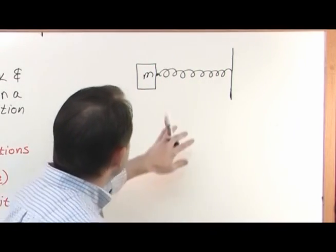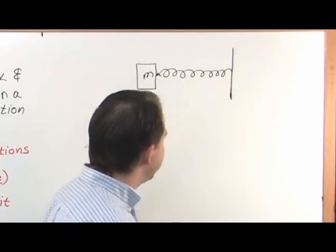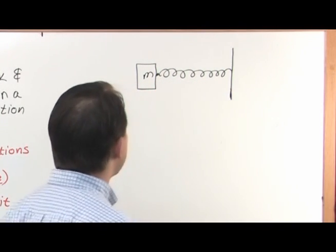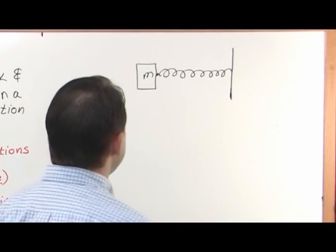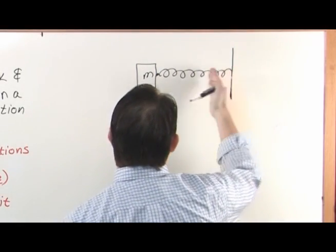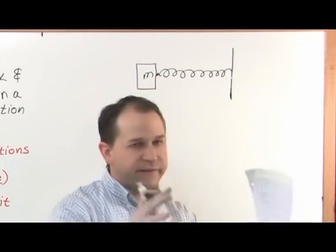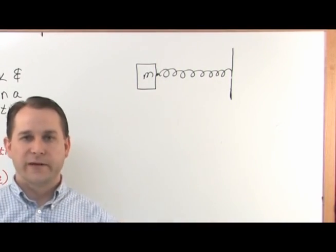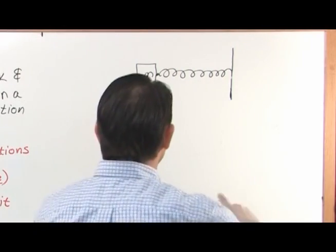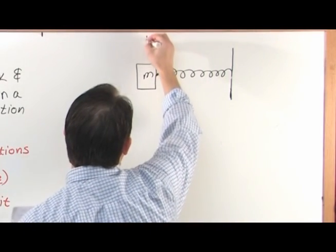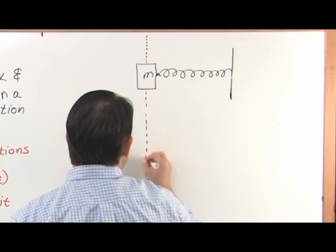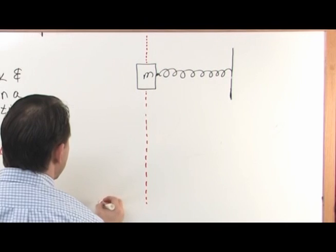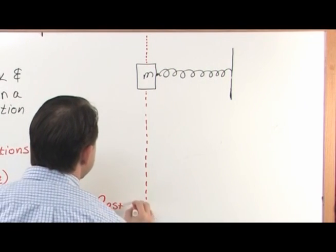Mass M. And this spring has a certain stiffness. We'll talk about that later, but basically has a stiffness to it. Now let's say this is the rest position. Let's say I have a wall and the spring is attached to a mass, and that spring has a natural place that it sort of likes to settle. If you just let it go, that's called the rest position. So we're going to draw a dotted line here and we'll call this the rest position.